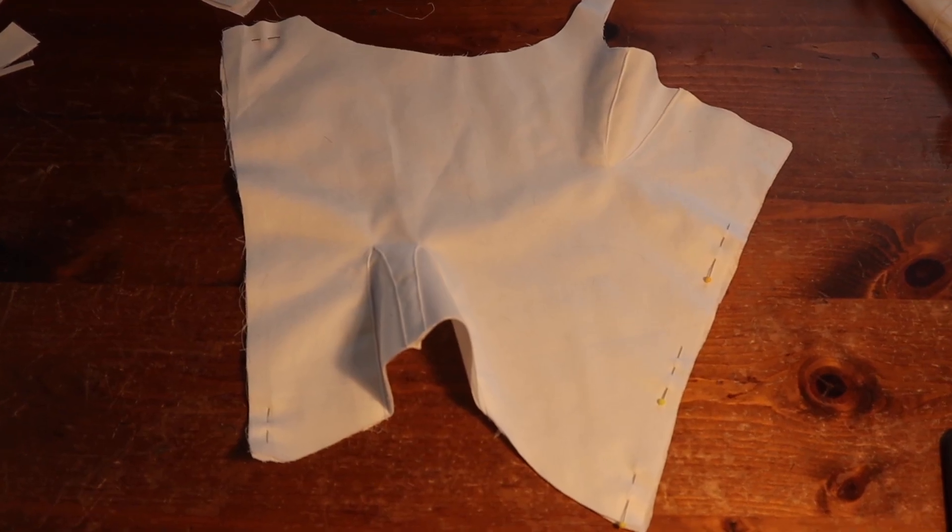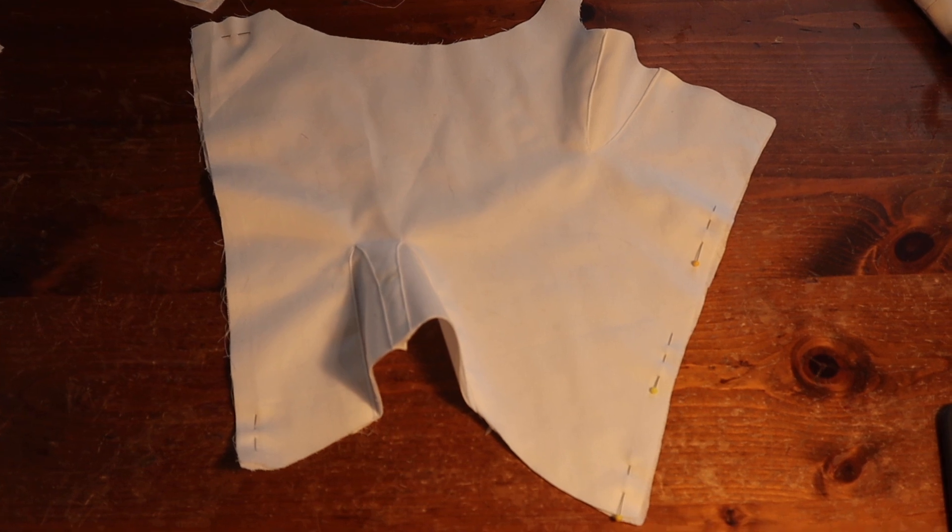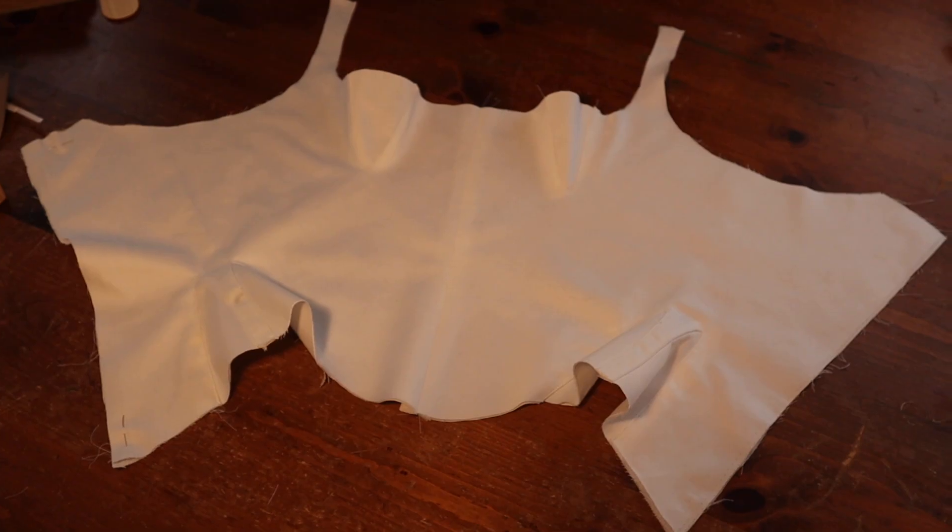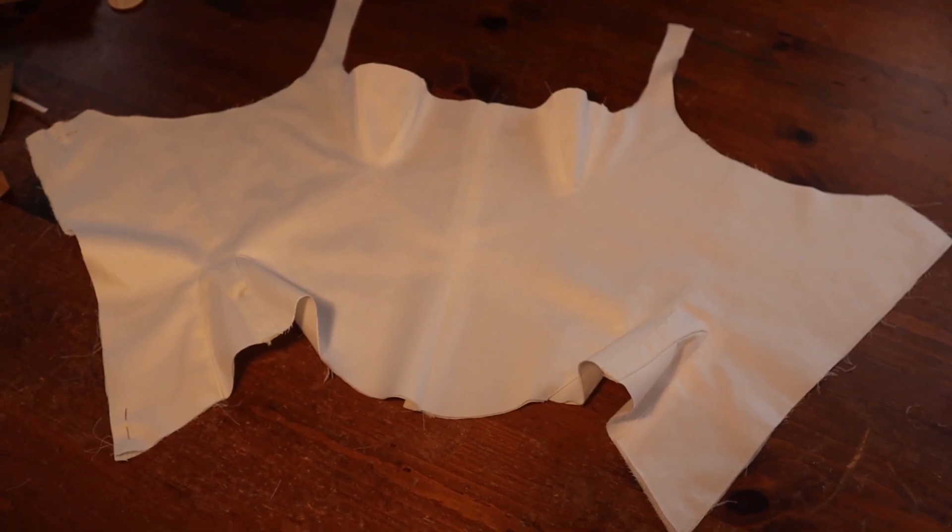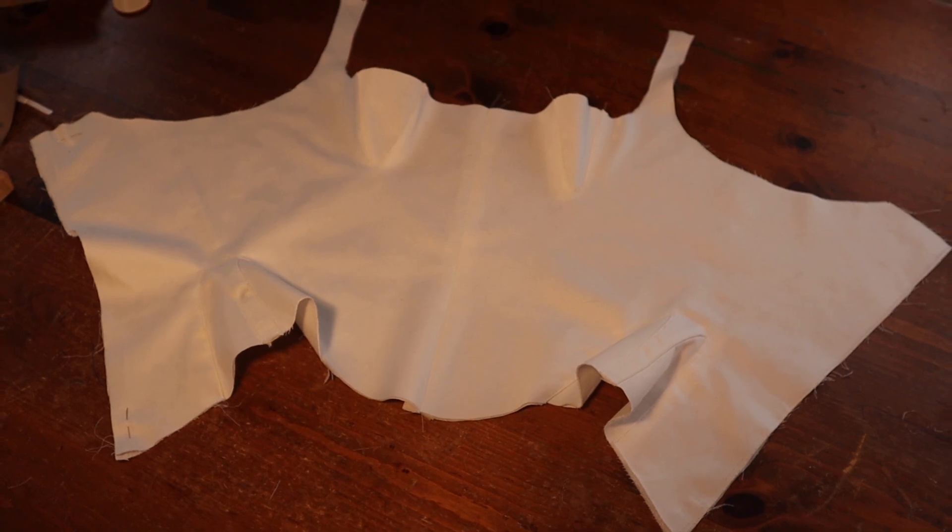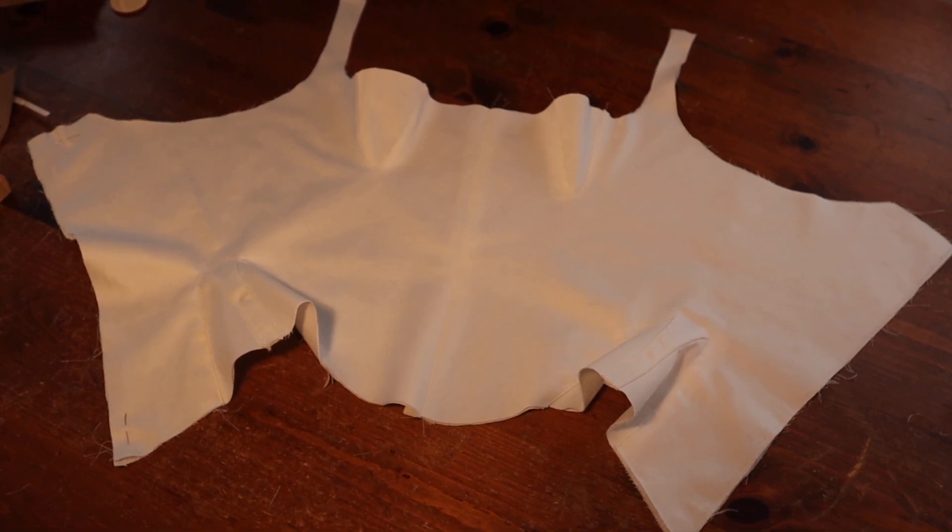Once all of the gussets are in, then I can stitch the two halves of the stays together. I just find it's much easier to handle the pieces if they're separate. And with the two halves together, it's really starting to look like a thing.